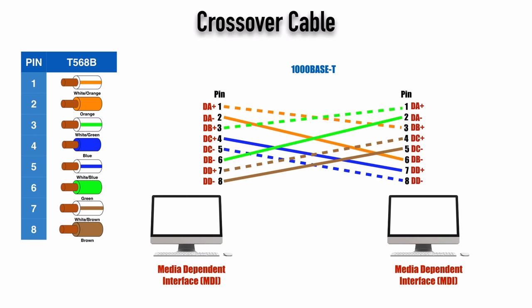The key thing to know is that a crossover cable is appropriate when interconnecting like devices: router to router, switch to switch, hub to switch, hub to hub, or PC to PC. Typically a PC and a router are both MDI devices, while switches and hubs are MDIX devices.